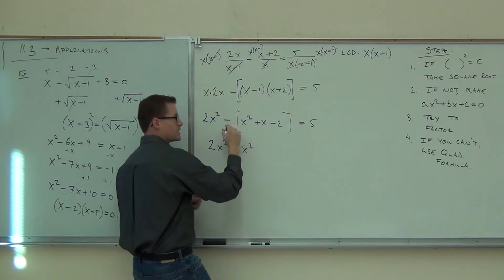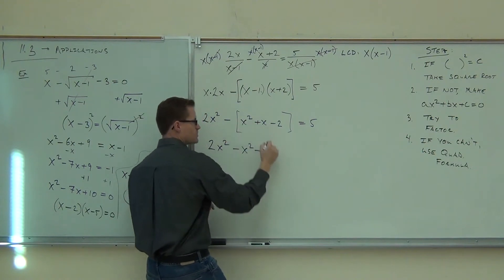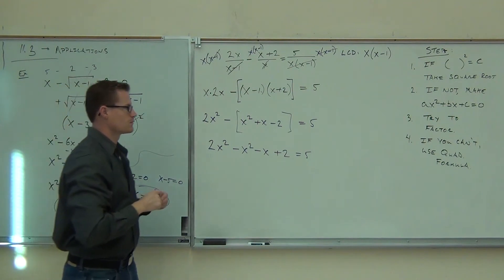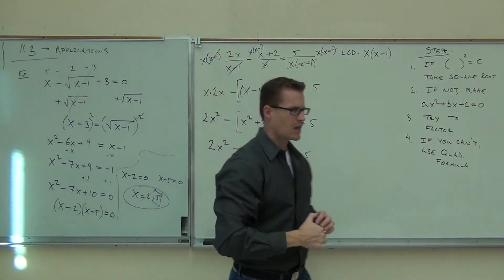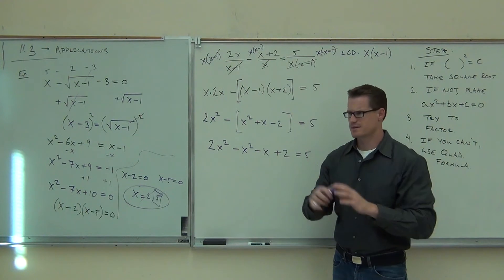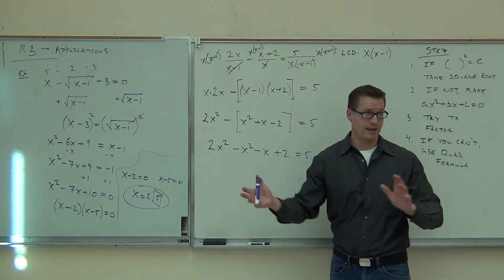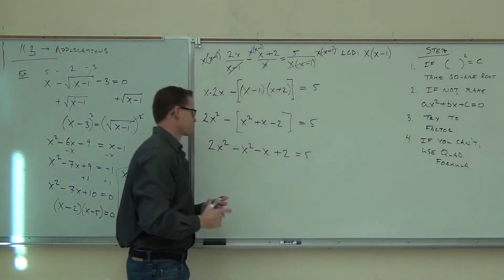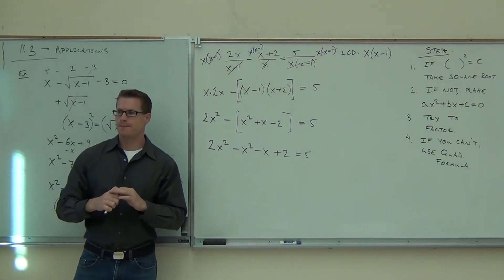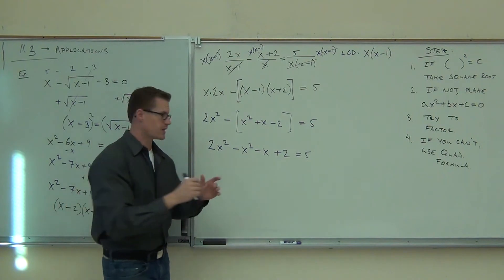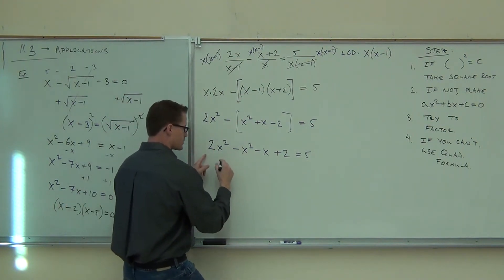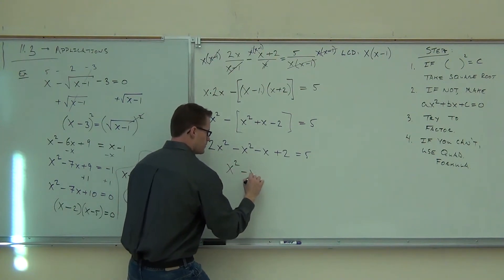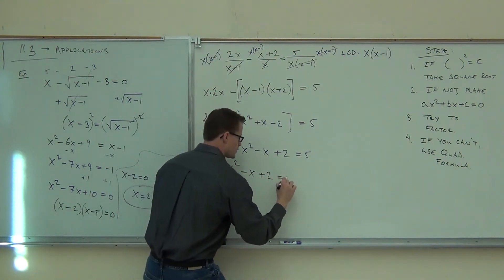Minus x squared. But then look at it — it's going to be minus x, and it's going to be plus 2, equals 5. Now we have some like terms. I see x squared and x squared here. So I'm going to get: minus x plus 2 equals 5.